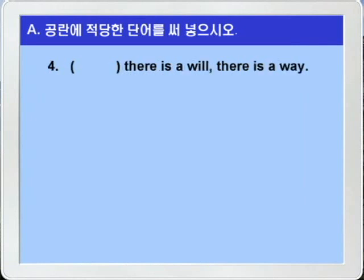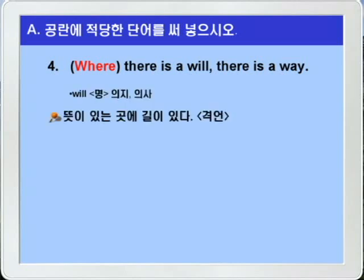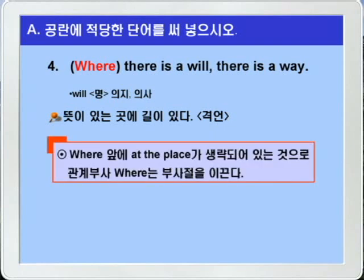4번. 'blank, there is a will, there is a way.' 이 문장 전에 본 기억이 나실 겁니다. 접사 공부할 때 배운 문장인데요. blank에는 where가 들어가면 되겠습니다. 여기 will은 명사로 의지, 의사 이런 뜻이니까 'where there is a will, there is a way' — 뜻이 있는 곳에 길이 있다, 이런 의미의 유명한 격언입니다. 여기 where는 원칙적으로 앞에 at the place가 생략된 경우로, 이 경우는 관계부사라기보다는 종속 접속사로 보는 경우가 더 많습니다. 'where there is a will, there is a way' — 외워두면 써먹을 때가 참 많은 격언입니다.